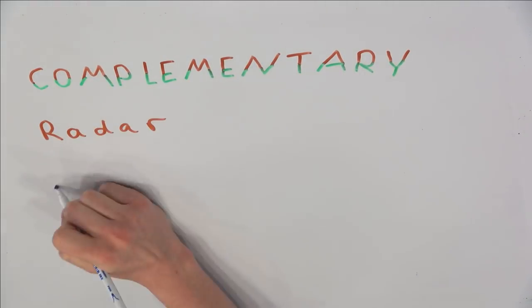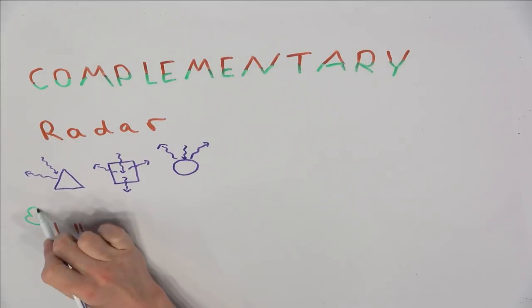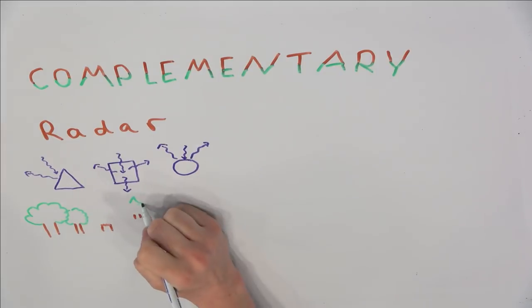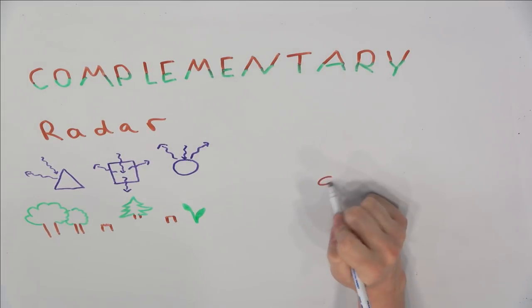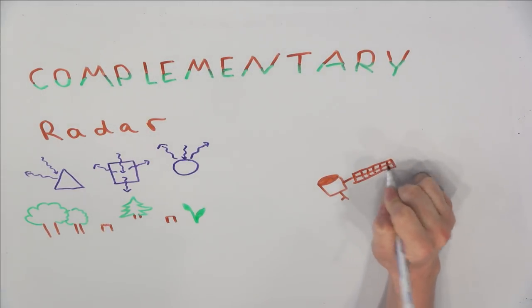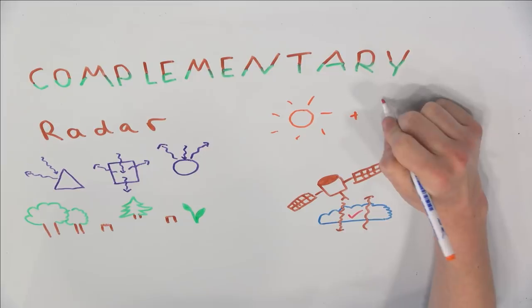Radar sensors see the world very differently. They respond to volume and orientation of objects on the Earth's surface, and they cannot see color. This makes them very useful for distinguishing between different structures, such as forest stands in different stages of regeneration, or small gaps in the canopy. They can also see through clouds, and since they emit their own radiation, they work day and night.